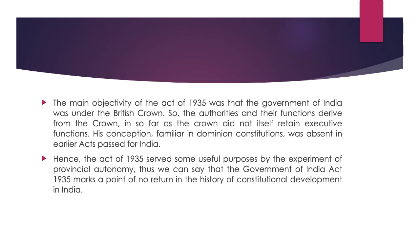The main objective of the Act of 1935 was that the Government of India was under the British Crown, and the authorities and their functions derived from the Crown. Insofar as the Crown did not itself retain executive functions, his conception familiar in dominion constitutions was absent in the earlier acts passed for India. Hence, the Act of 1935 served some useful purposes through the experiment of provincial autonomy. Thus we can say that the Government of India Act of 1935 marks a point of no return in the history of constitutional development of India.